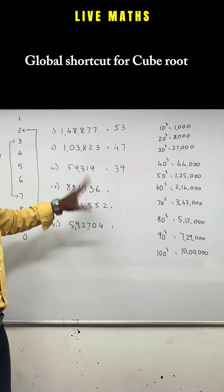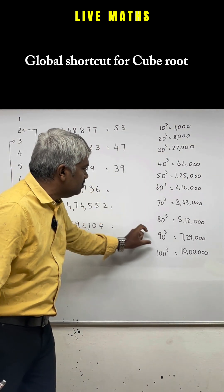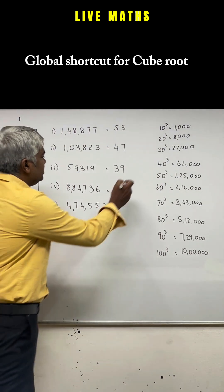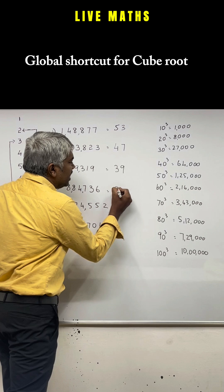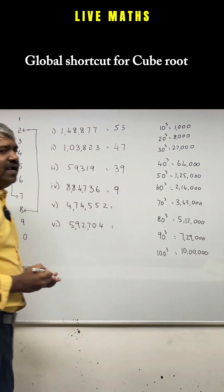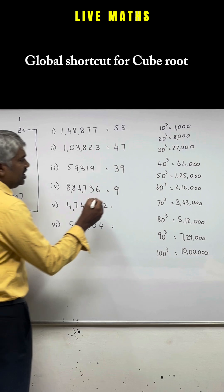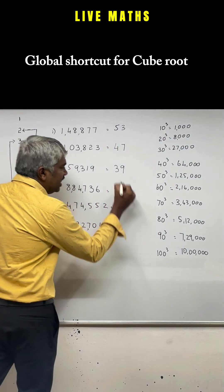8,84,000. Where does 8,84,000 come? It comes between 7,00,000 and 10,00,000, between 90 and 100, which has to be 90s. What is your last digit over here? 6. Is 6 connected to anything? No. So your answer is 96.